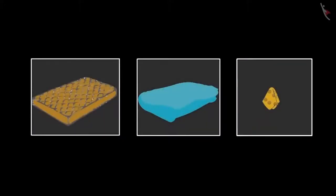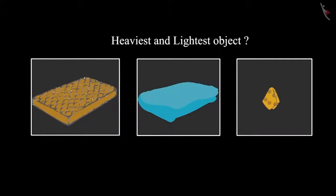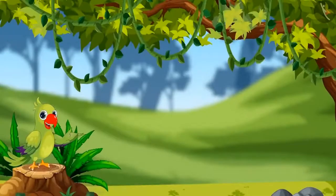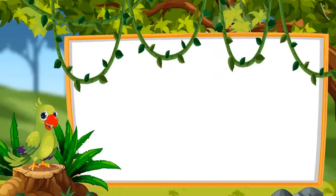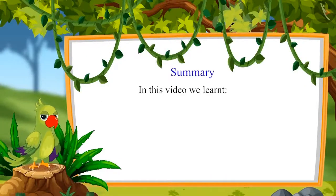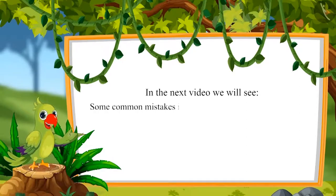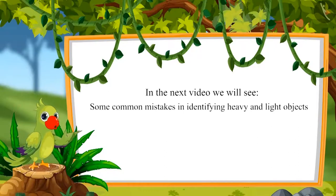Some objects are kept here: a handkerchief, a bed sheet and a mattress. Children, can you tell me which of these three objects is the heaviest and which is the lightest one? Yes, the mattress is the heaviest and the handkerchief is the lightest. Was your answer the same, children? It seems you have learned to recognize the lightest and heaviest objects. So, children, in this video, we learned how to identify the heaviest and the lightest objects. In the next video, we will see some common mistakes in identifying heavy and light objects which should be avoided. Till then, bye, children!